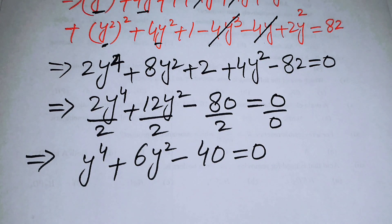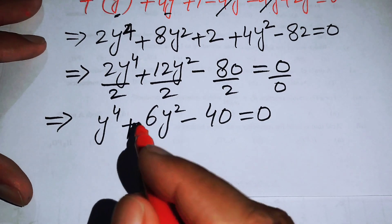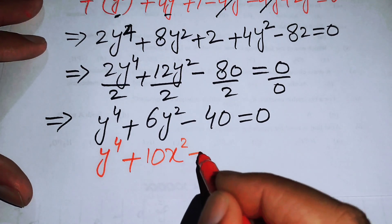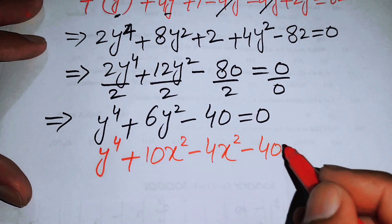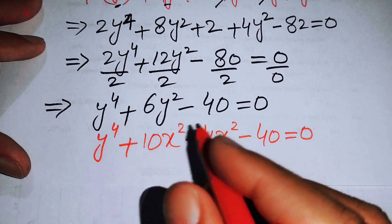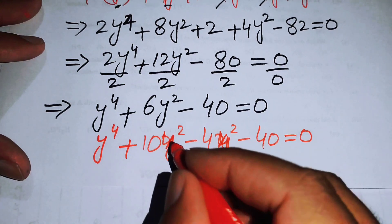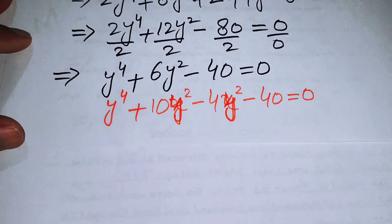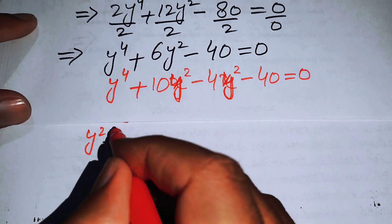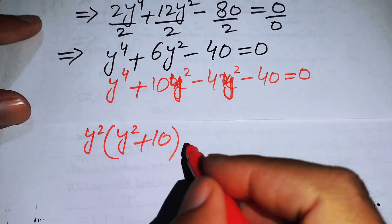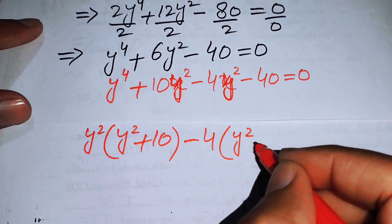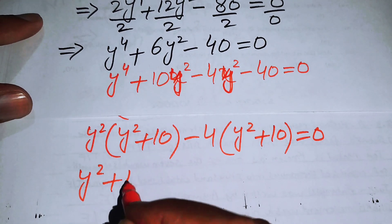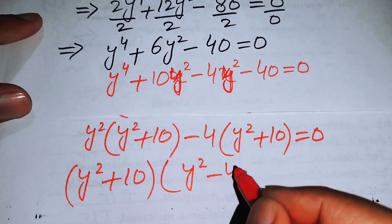Now we factor this equation to find the values of y. We write y⁴ + 10y² − 4y² − 40 = 0, then factor: y²(y² + 10) − 4(y² + 10) = 0, giving (y² + 10)(y² − 4) = 0.